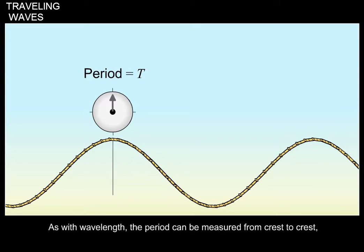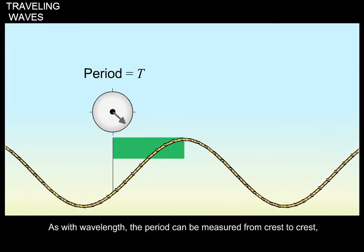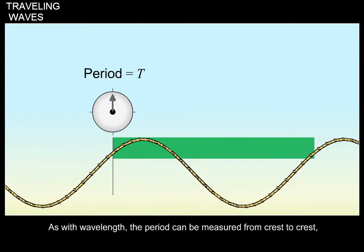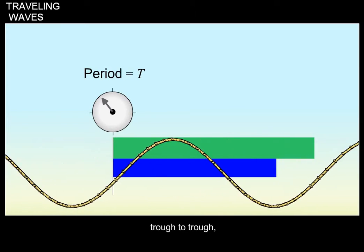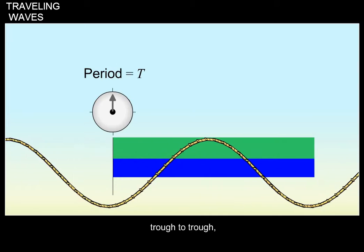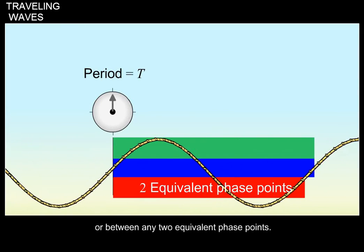As with wavelength, the period can be measured from crest to crest, trough to trough, or between any two equivalent phase points.